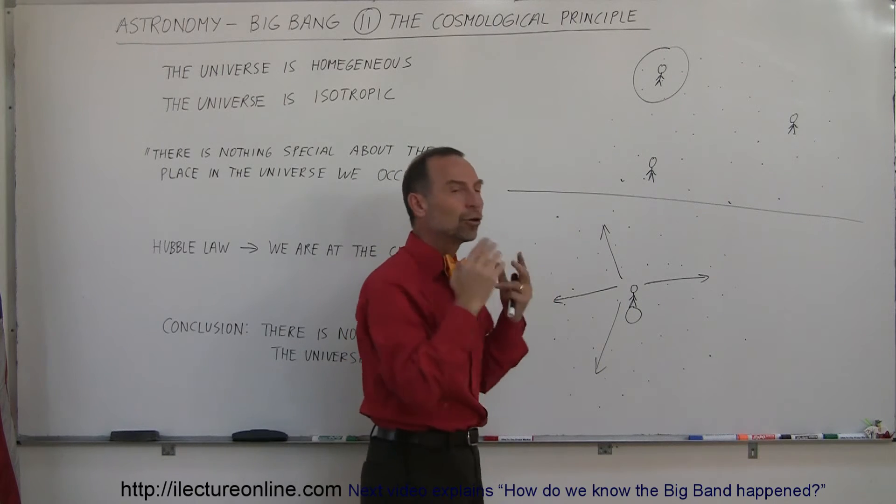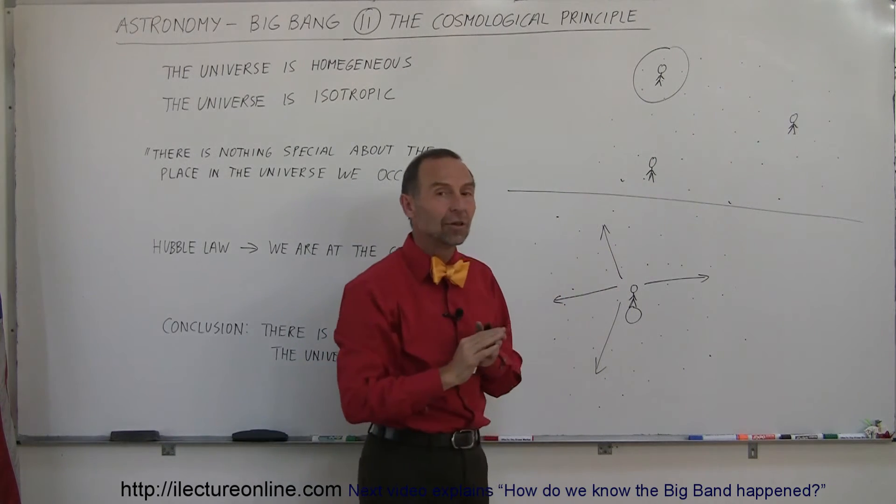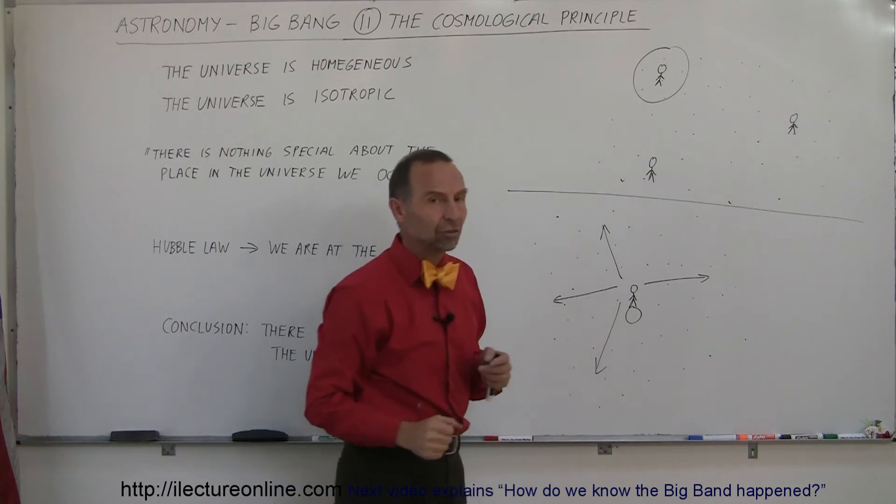We look through our telescopes, we look in every different direction, and no matter where we look, the universe appears to look the same in any line of sight. So therefore, we say the universe is homogeneous and the universe is isotropic.